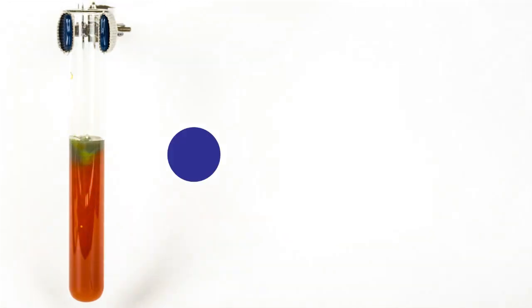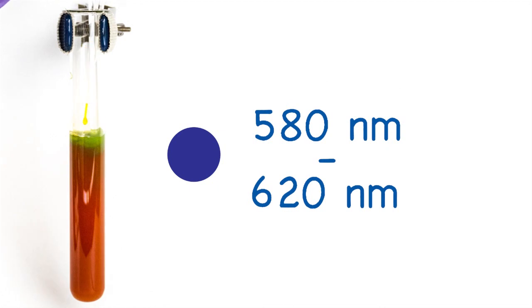We see blue because the charge transfer complex absorbs light at higher wavelengths, and when the blue and yellow layers mix, we get green.